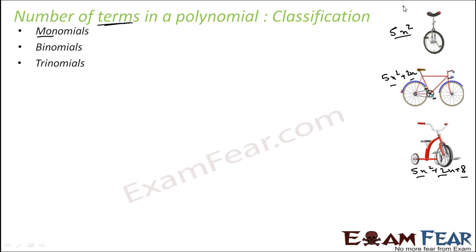We can actually classify them into monomials, binomials, and trinomials. Monomials — 'mono' means one, so it has one term. You can remember this with 'monocycle.' Binomial — 'bi' is two, so two terms, like a bicycle. Trinomial — 'tri' is three, like a tricycle. Monocycle, bicycle, tricycle is a good way to remember these terms.